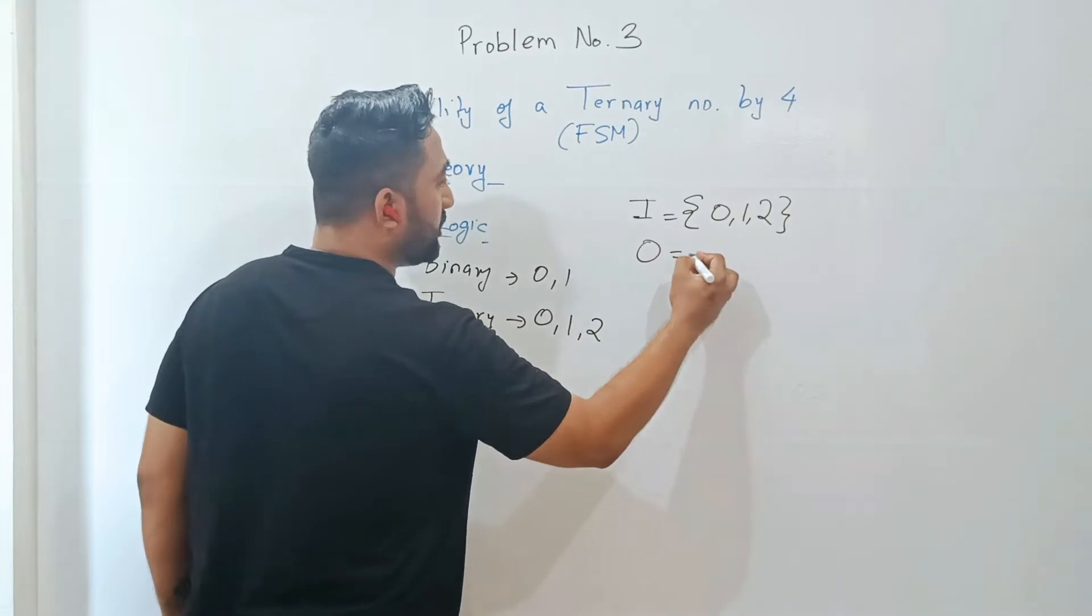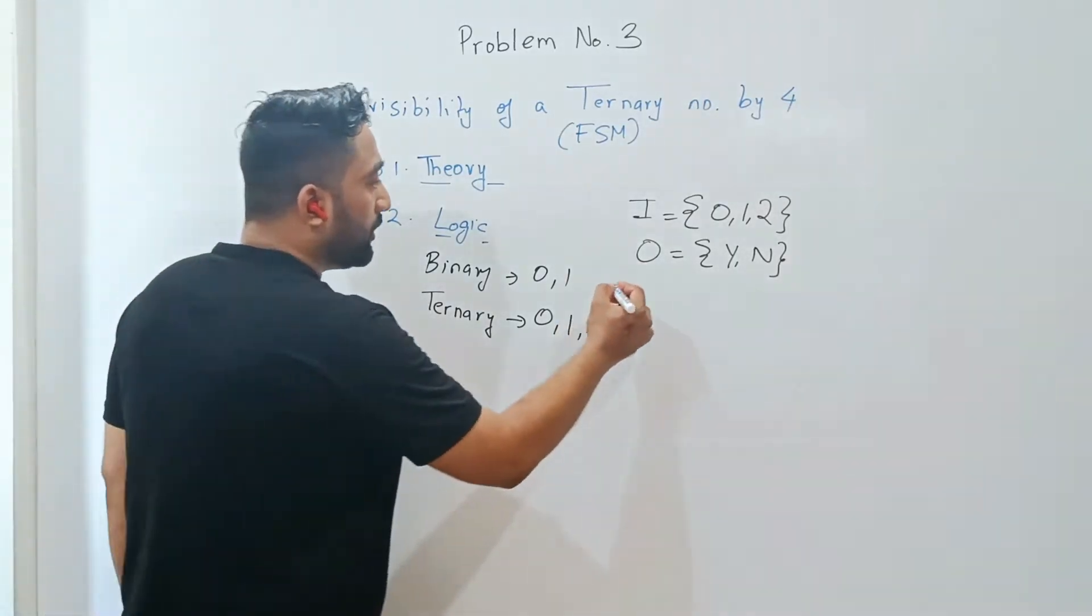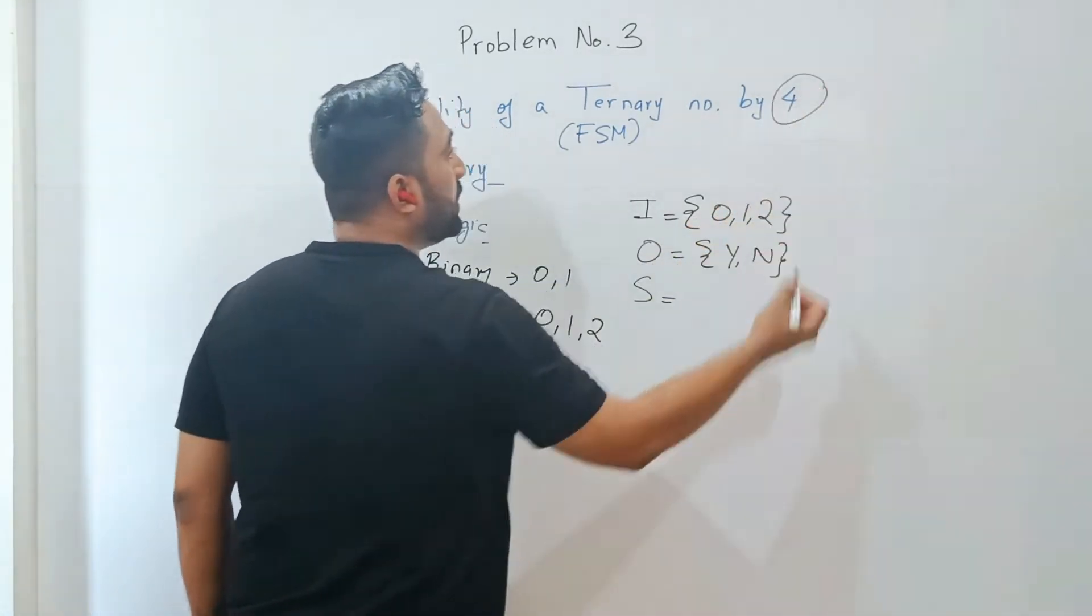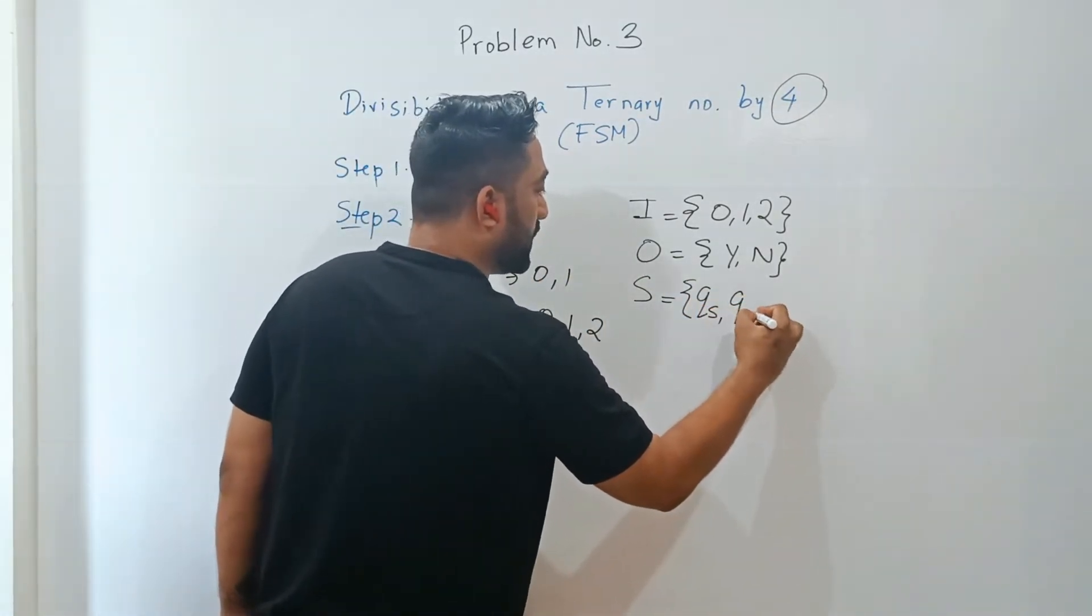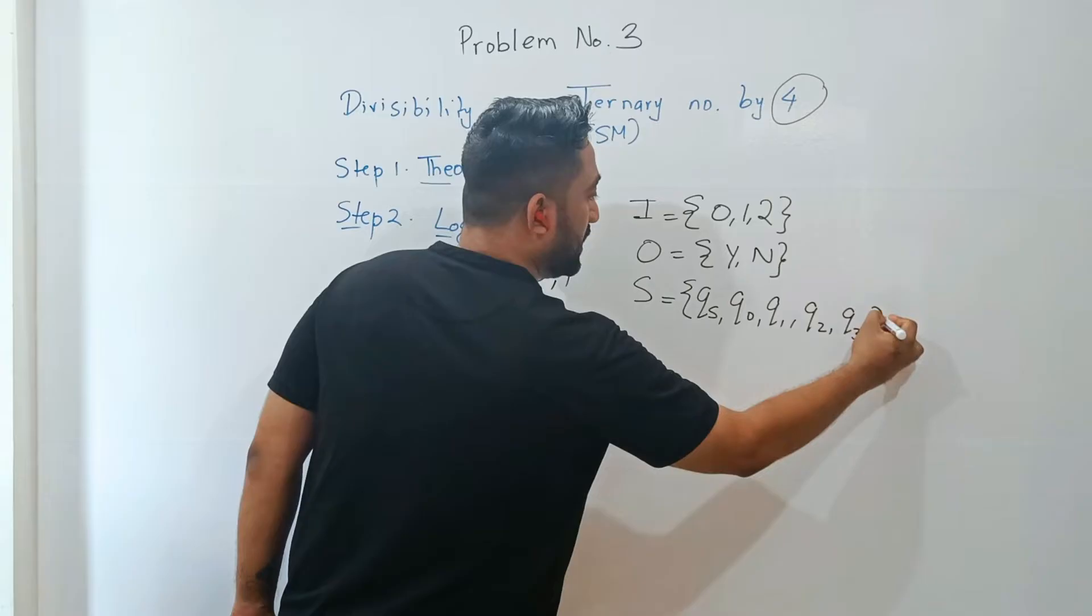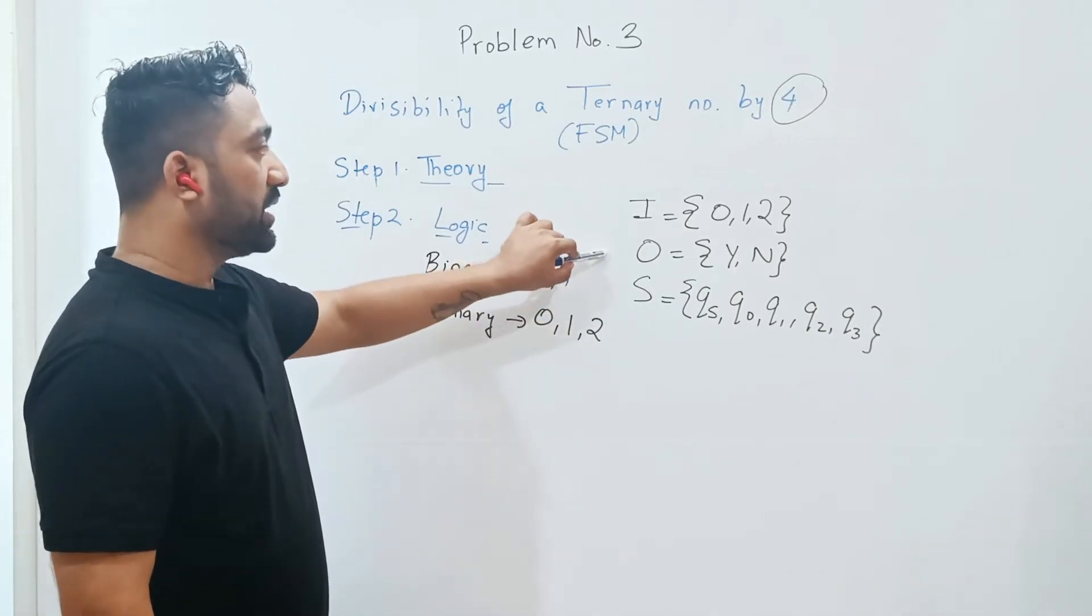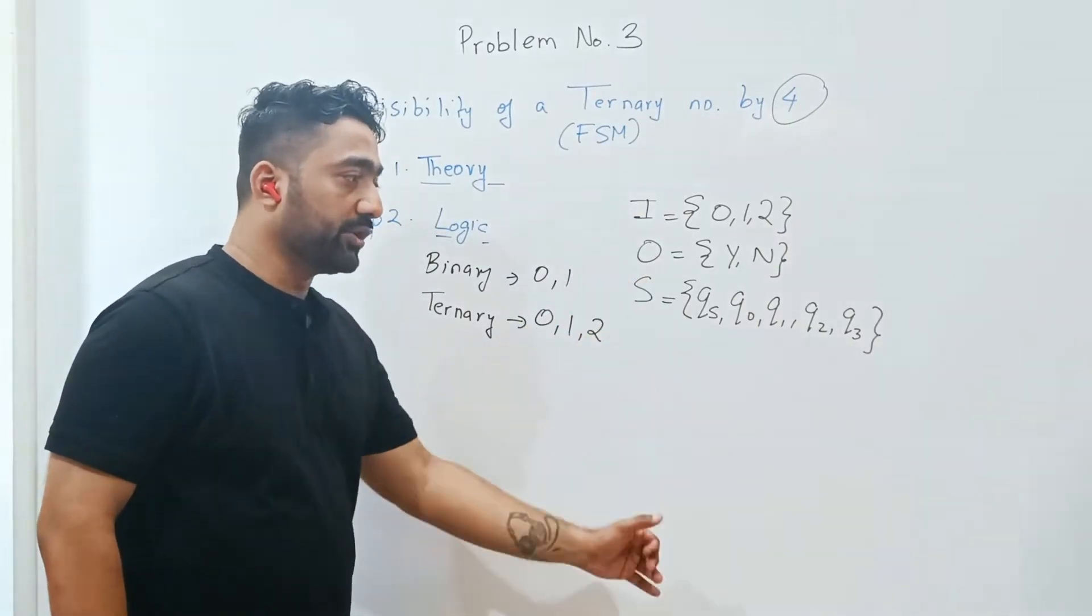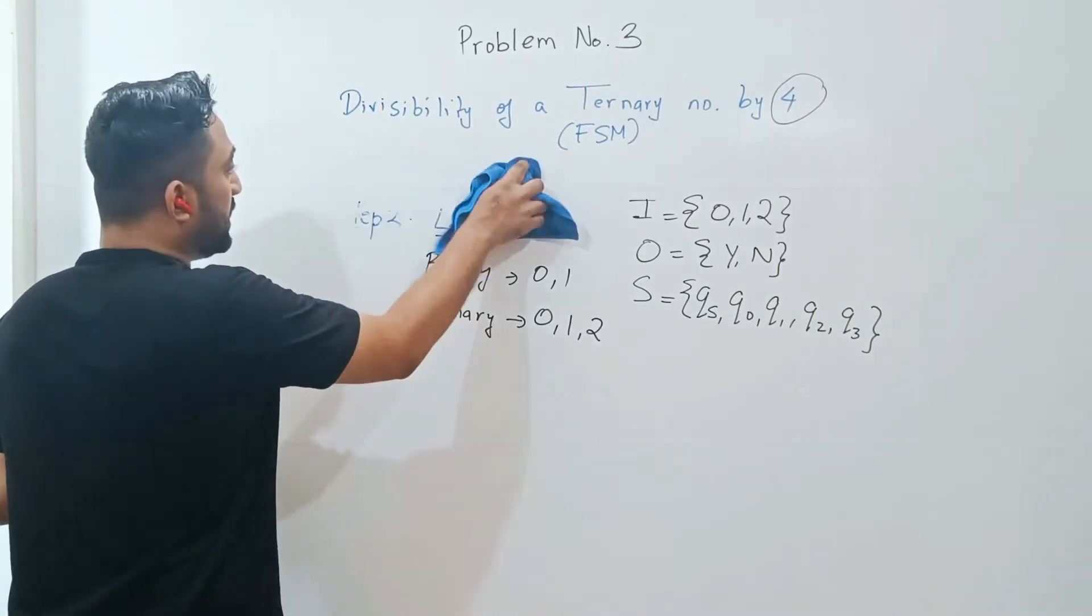What is O? O will remain the same - yes or no. Either you divide this number completely or not. What are the states? States will not depend upon the inputs, states depend upon the divisor. Divisibility by 4, so it will remain the same as the previous question: initial state qs, then q0, q1, q2, and q3. These are the 5 states for this problem. States will be the same, O will be the same, difference will be in I - 0, 1, and an additional input 2.